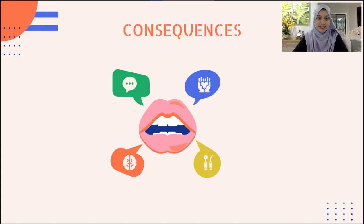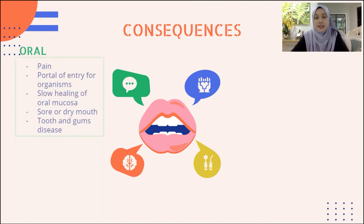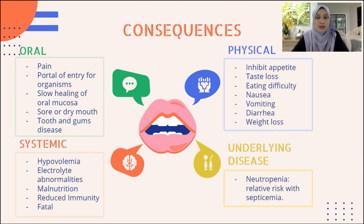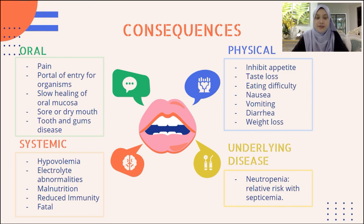My name is Farah Hani, and I will continue with the consequences of post-radiation mucositis. The consequences can be divided into four scopes: oral, systemic, physical, and underlying disease. In the oral region, it will cause pain and the oral region can become a portal of entry for organisms causing further complications, slow healing of the oral mucosa, sore and dry mouth, and tooth and gum disease. Systemically, the patient will present with hypovolemia, electrolyte abnormalities, malnutrition, and reduced immunity; in severe conditions it may be fatal.